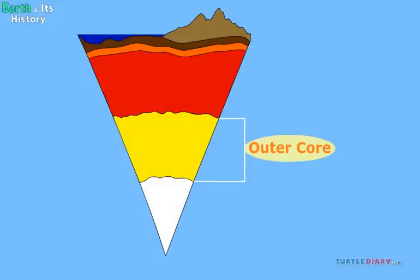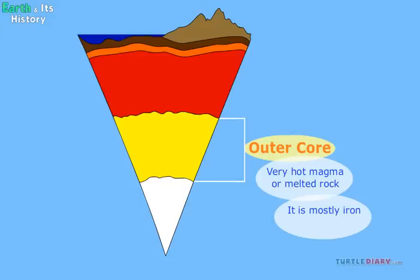The outer core is very hot magma or melted rock. It is mostly iron and nickel. It is about 1,400 miles or 2,300 kilometers thick.